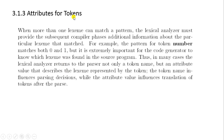The next subtopic is attributes for tokens. When more than one lexeme can match a pattern, the lexical analyzer must provide subsequent compiler phases with additional information about the particular lexeme that matched. For example, the pattern for token number matches both 0 and 1, but it is extremely important for the code generator to know which lexeme was found in the source program. Thus, in many cases the lexical analyzer returns to the parser not only the token name but also an attribute value describing the lexeme.